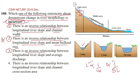There is an inverse relationship between the longitudinal river slope and the average discharge. We see that slope is high, discharge is less. Slope is little less, discharge increases. If slope is very less, discharge is more. So this option is correct.